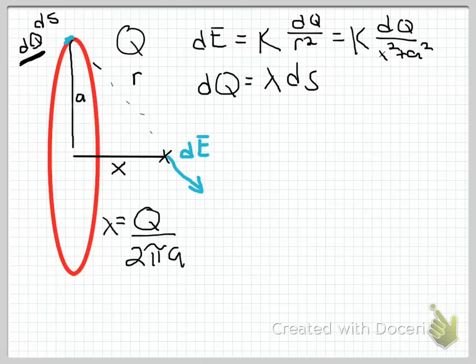So now I'm just going to leave this written as lambda, as opposed to Q over 2πA, just for the sake of brevity. So now I can rewrite my DE, substituting in for DQ. So I'm going to get K times lambda over X squared plus A squared. And this is going to be DS. Now I'm getting closer. So the final preparation I need to make here is going to come from symmetry.